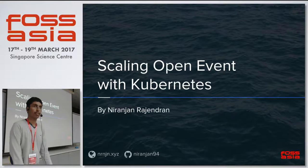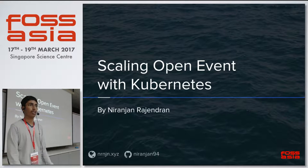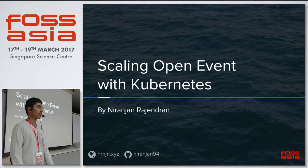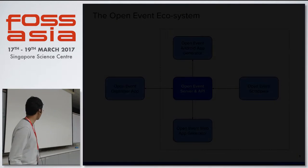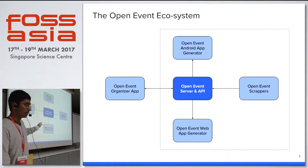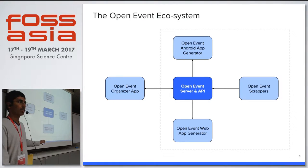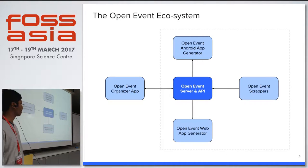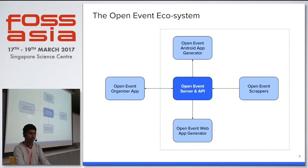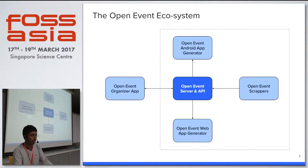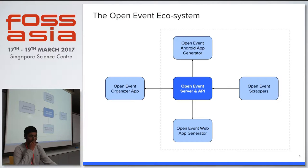When I say Open Event, I'm not just talking about the Open Event server. The Open Event ecosystem consists of a lot of things. These are the major things the Open Event project consists of: we have the Android app generator, then we have the web app generator, and we have scrapers. Along with that, we have a companion organizer app which the organizers can use. Let's go one by one to see what each of these things consists of.